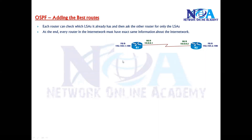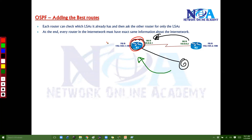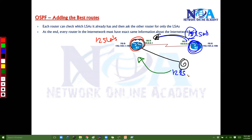Every router checks the number of LSAs it received from its neighbor. For example, if this router has 12 LSAs and the neighbor is advertising 15 LSAs, there are some additional LSAs on the neighbor side. If the neighbor has only 2 LSAs, then there is no problem.